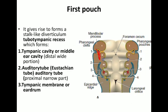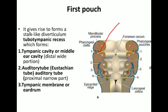So the first pharyngeal pouch forms three structures: the tympanic cavity or middle ear cavity from the distal dilated part, the auditory tube from the proximal narrow part, and the tympanic membrane from the distal most base of the diverticulum.